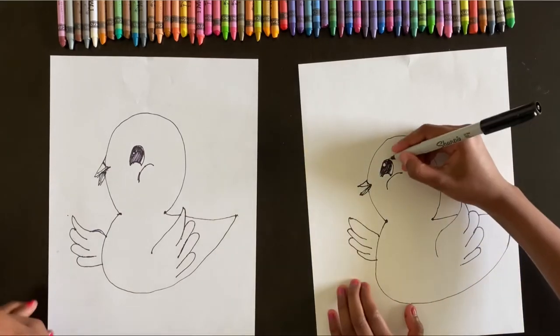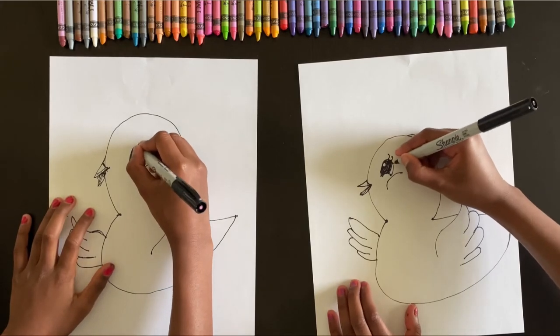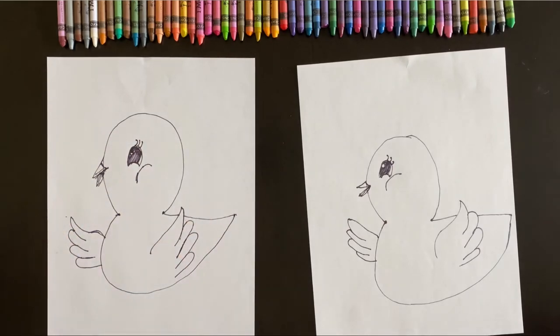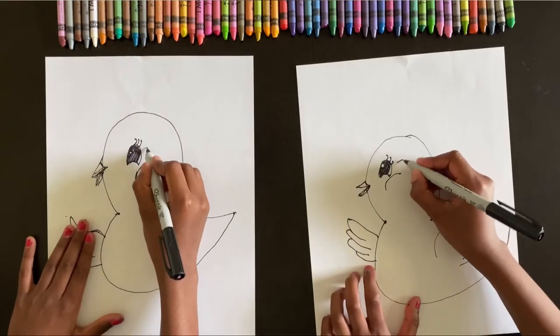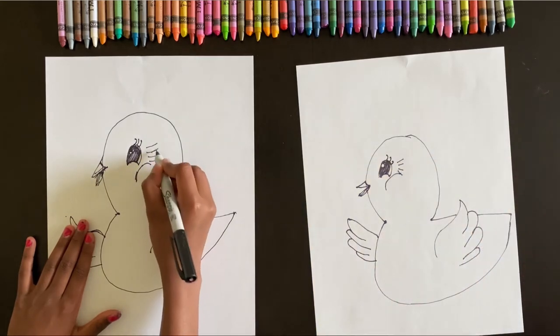So now you can add eyelashes if you want. You don't have to. If you want this to be a boy you don't have to add the eyelashes. If you want this to be a girl you can keep the eyelashes. Now draw four lines right here. One, two, three, four. There.